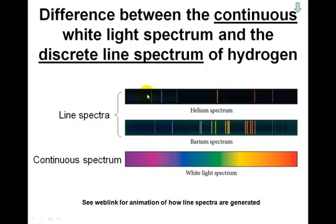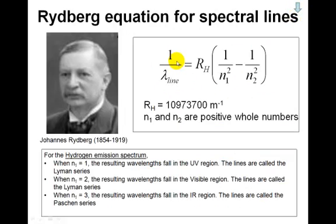For pure elements, you see specific lines corresponding to specific wavelengths of light. Rydberg came up with an equation to predict the wavelength for the hydrogen atom. He had a constant with n₁ and n₂ as positive whole numbers, but couldn't explain the significance of this constant or the positive whole numbers.